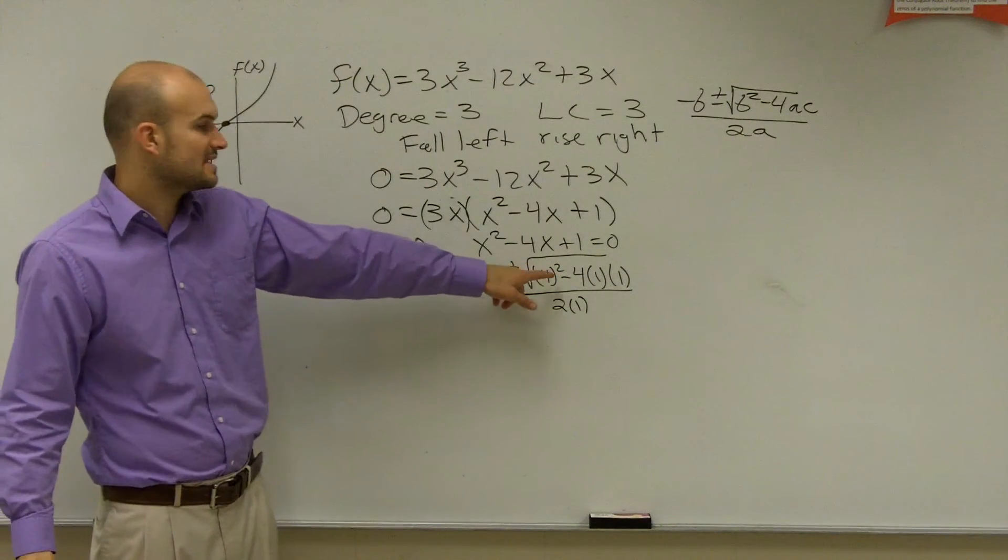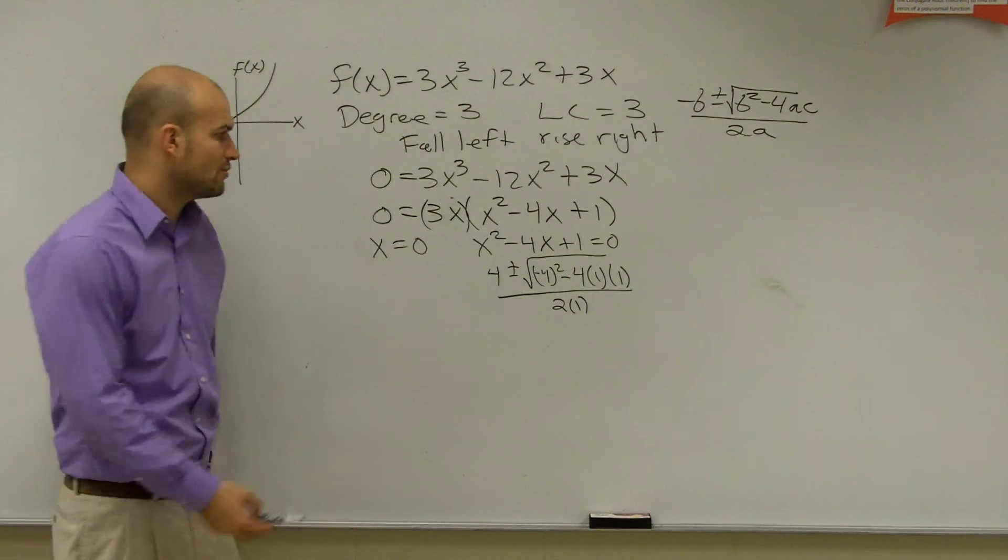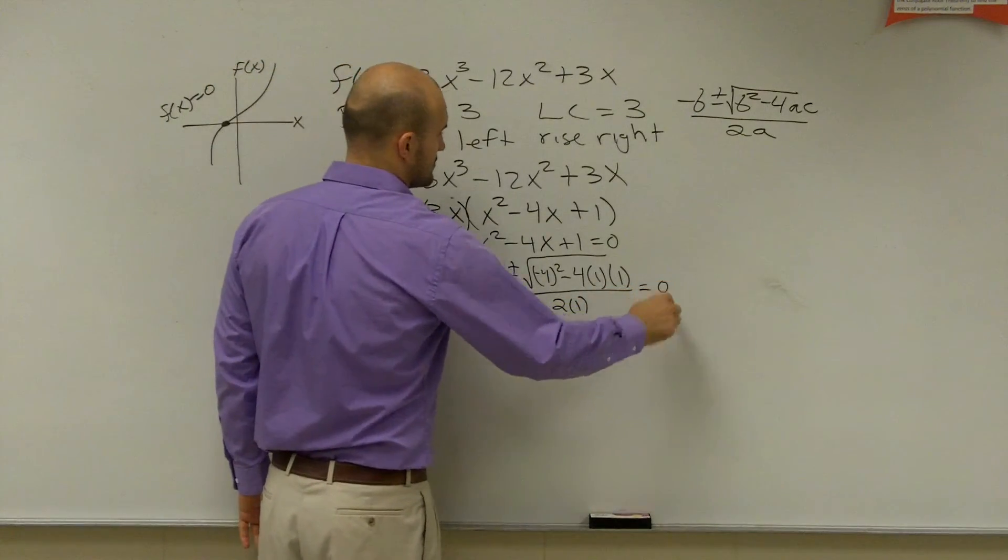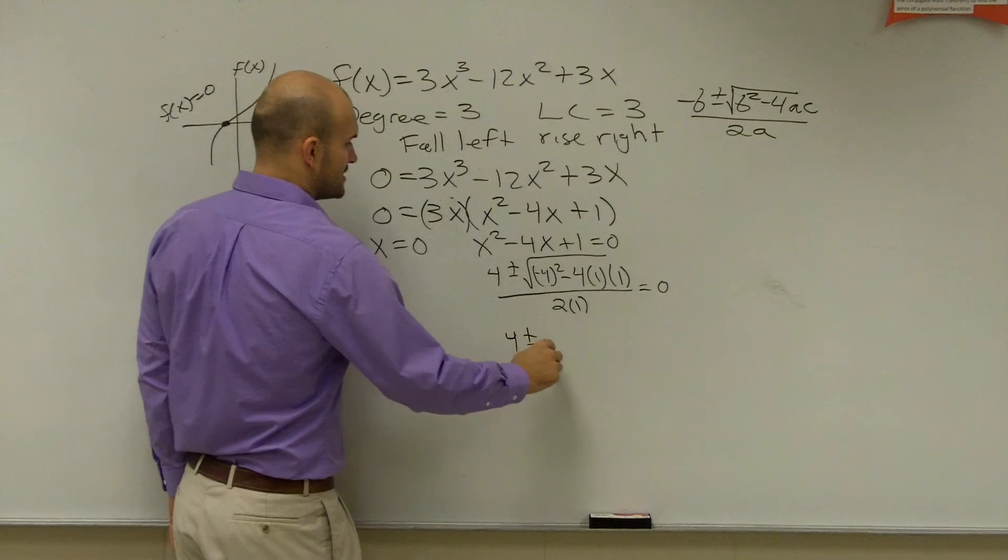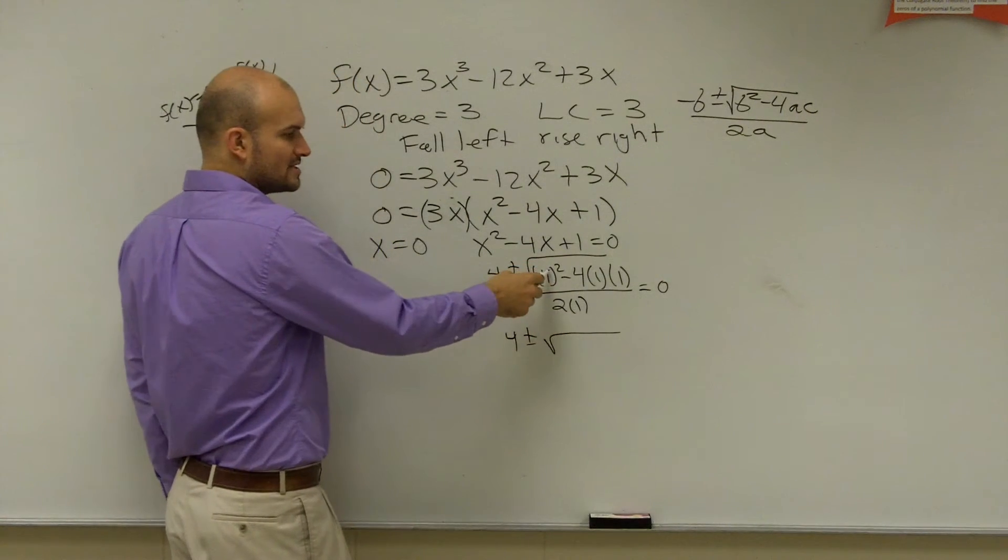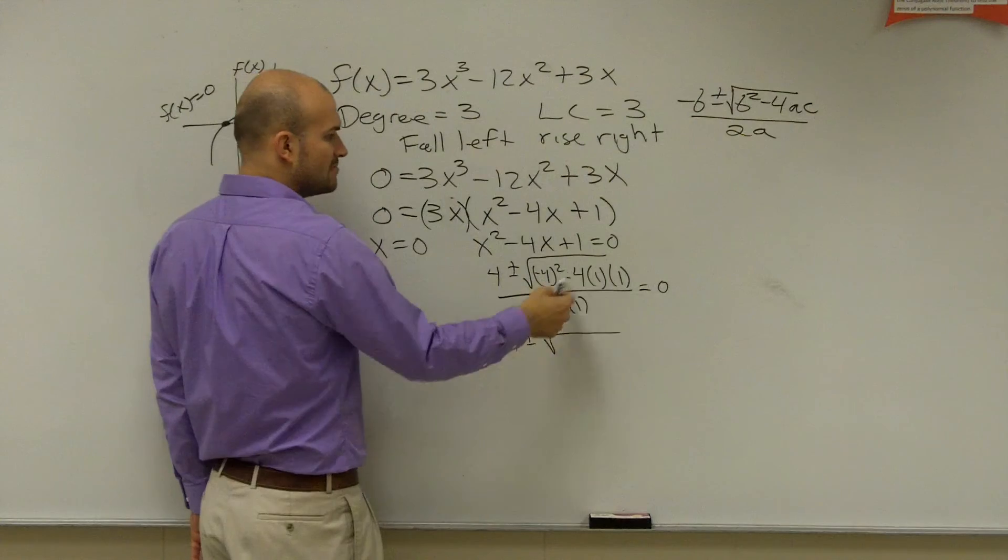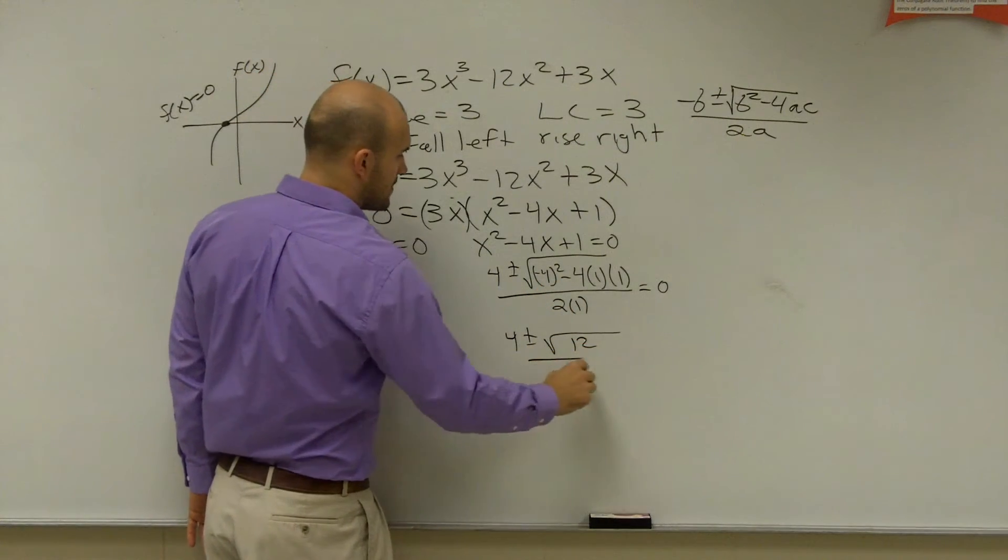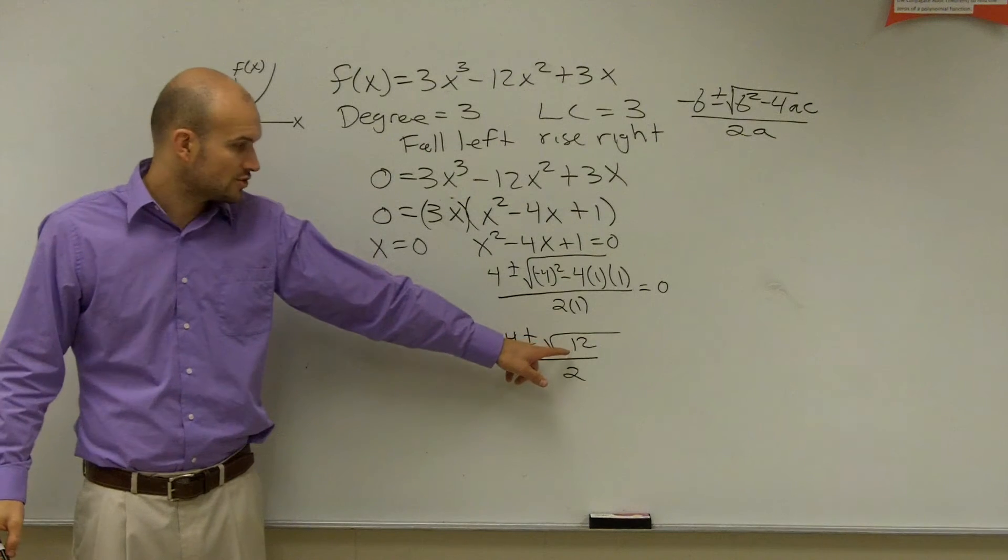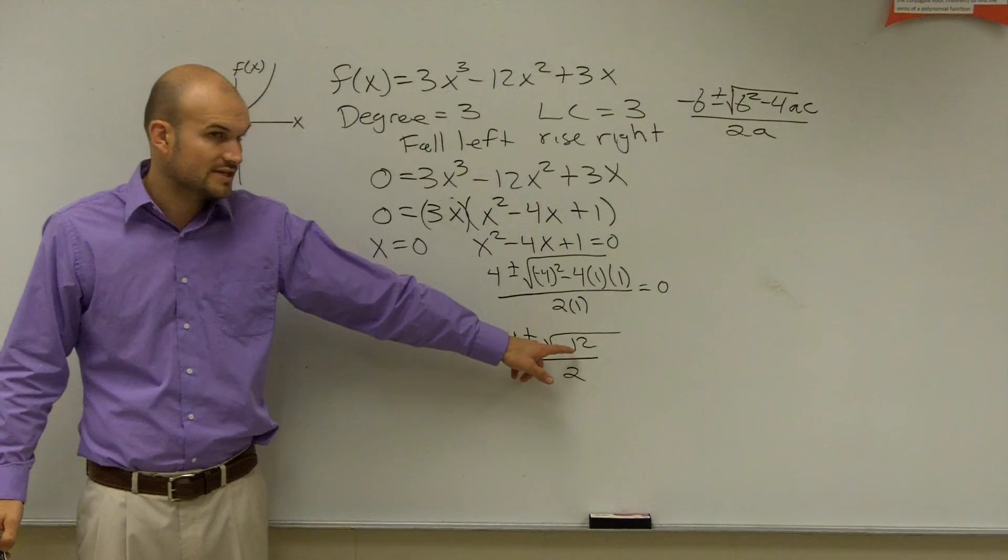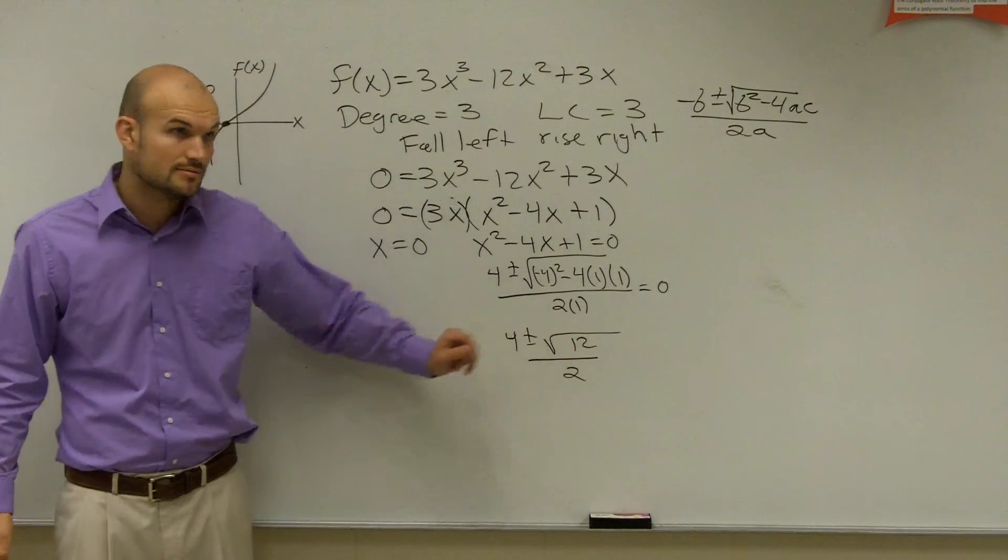So, then what we're going to have here is 16 minus 4, which is 12. So I have 4 plus or minus negative 4 squared is 16. 4 times 1 times 1 is 4, so I have 16 minus 4, which is square root of 12, divided by 2. I can reduce the square root of 12 into 2 radical 3, right?